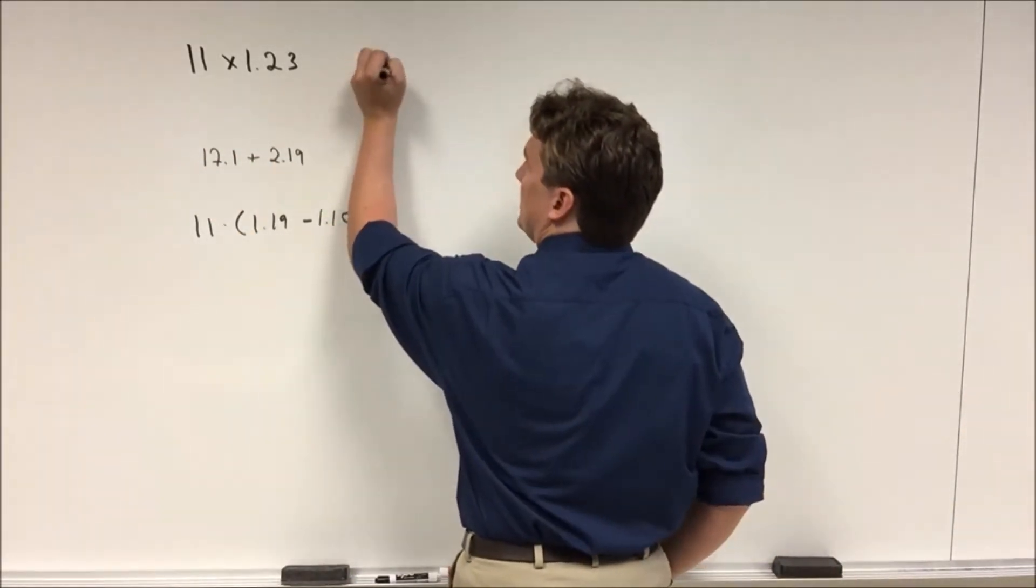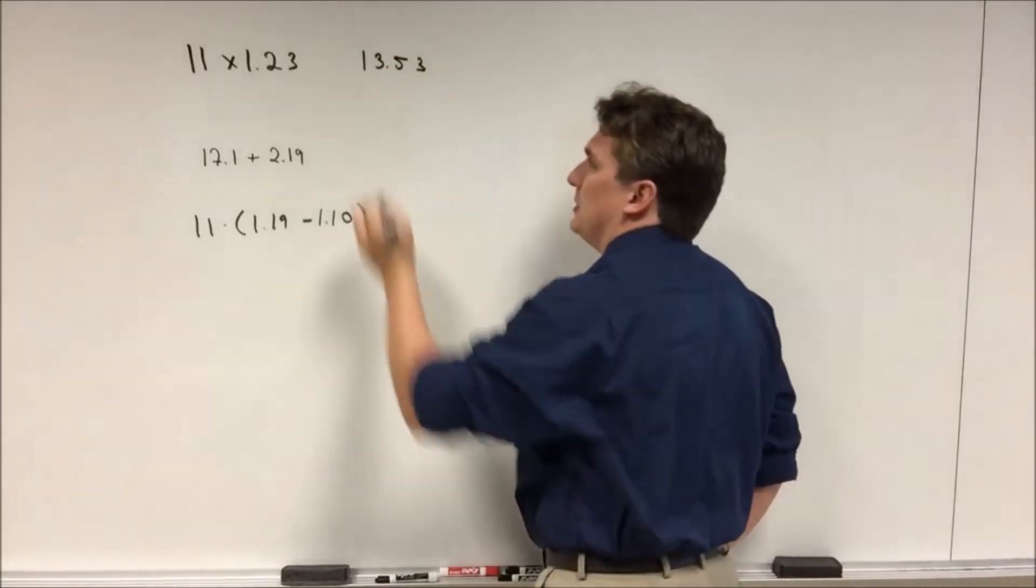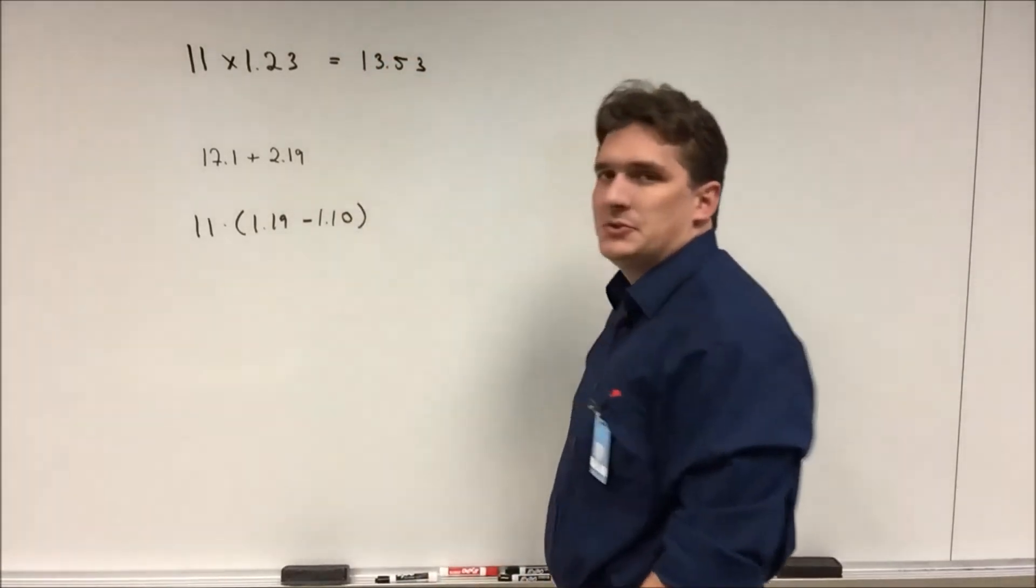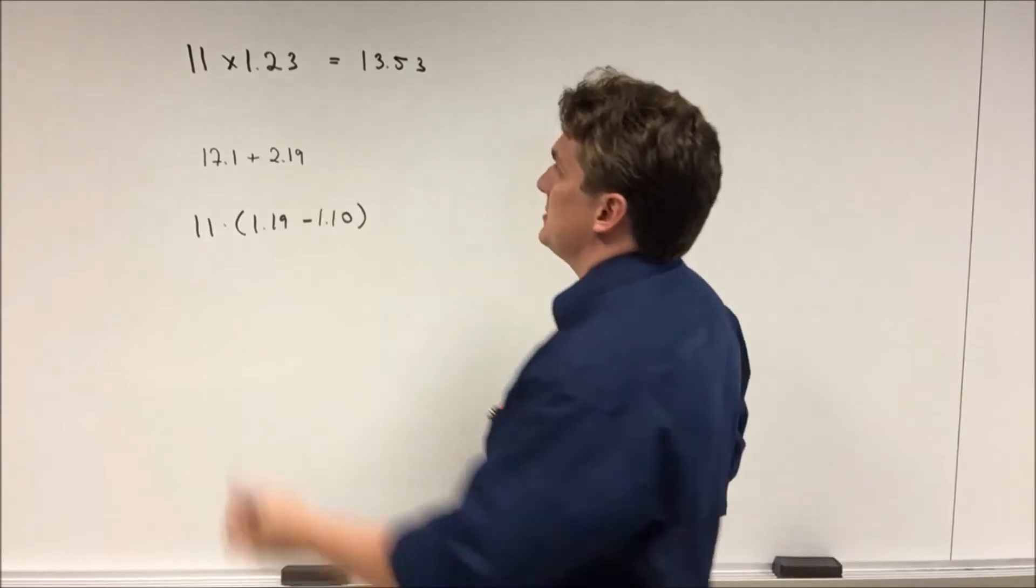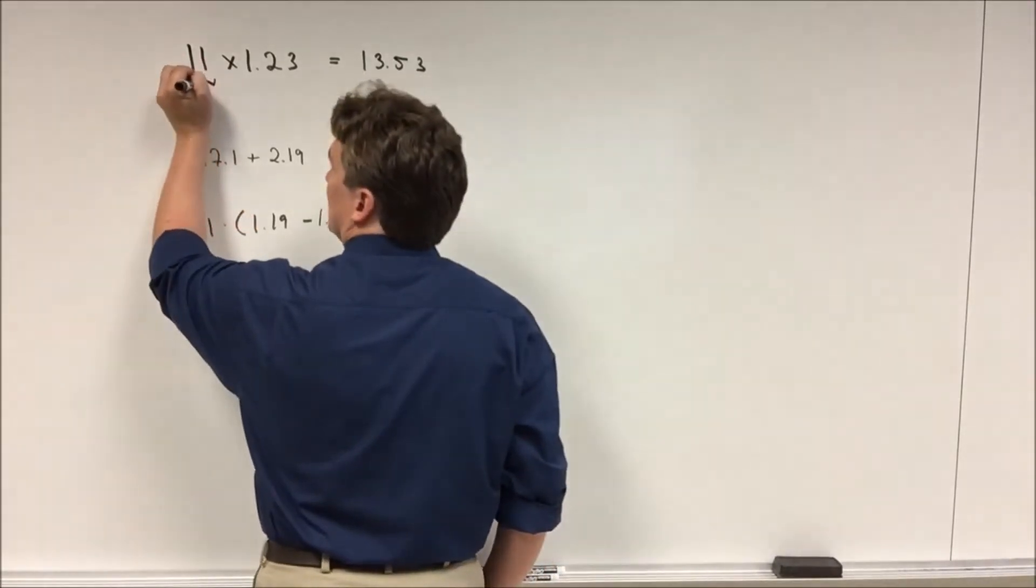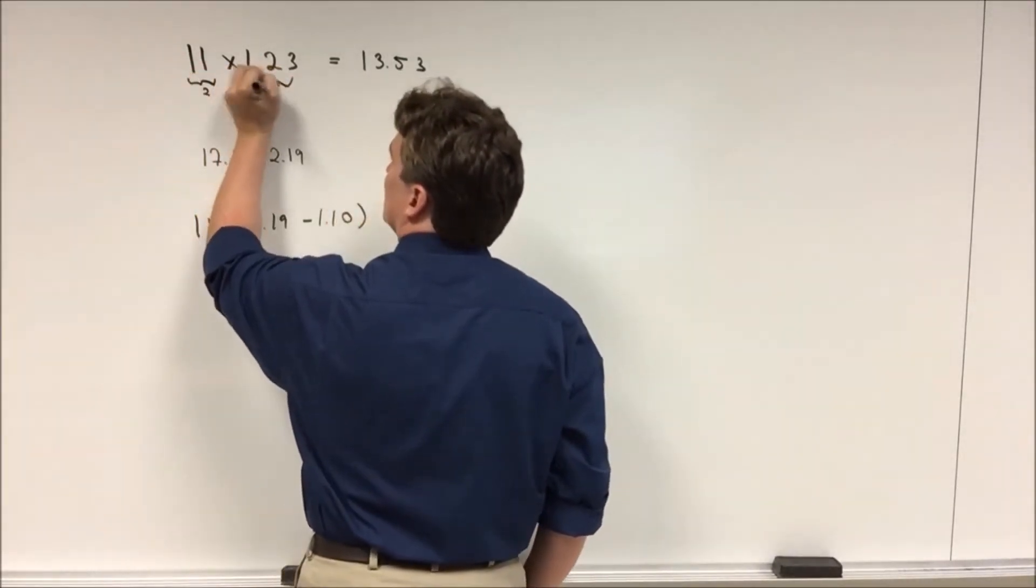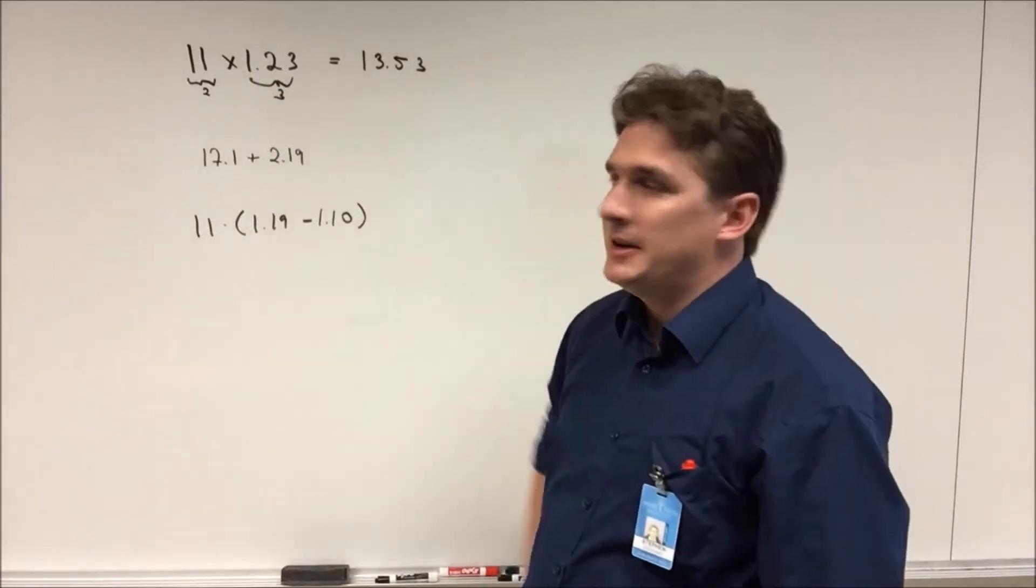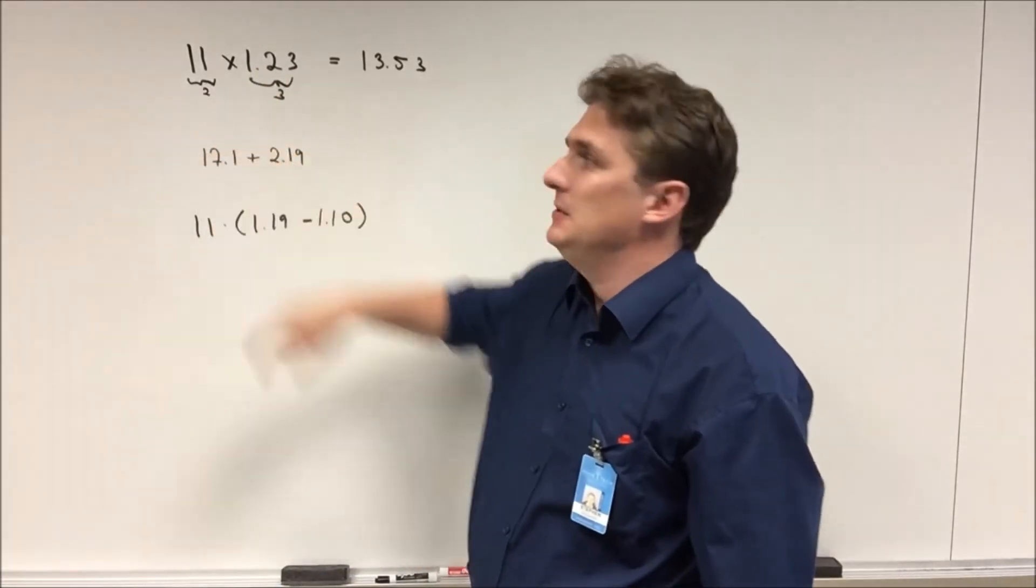Your final answer here is going to be 13.53. And what we have to do is we have to figure out how many sig figs are going to be in our final answer. So again what we do is we're going to count. We've got two here, we've got three here, which tells us that our final answer has to have two significant figures.